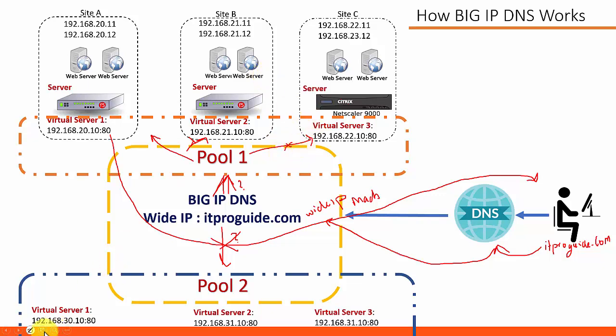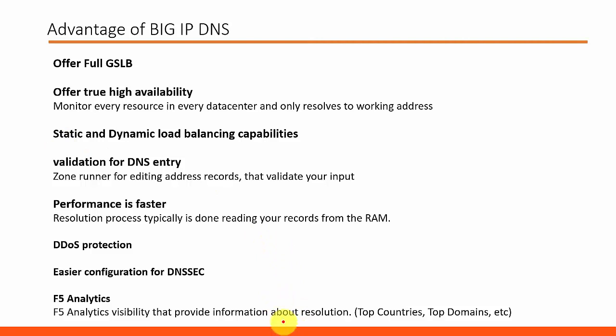Big IP DNS overcomes all the drawbacks of traditional DNS. It offers full global server load balancing capabilities and true availability because it monitors every resource in every data center and only resolves to working addresses. It provides static and dynamic load balancing to resolve to the best available address. Zone Runner is a tool for editing address records that validates your input. Performance is faster because the resolution process is typically done reading records from RAM. There is also DDoS protection, ECR configuration for DNS security, and F5 analytics visibility providing information about your resolutions.